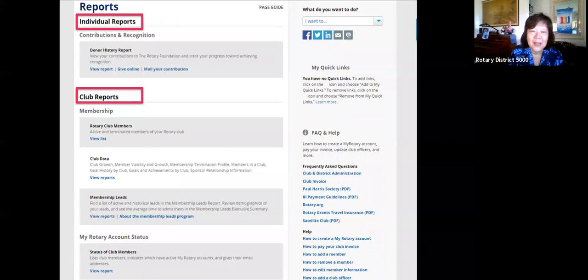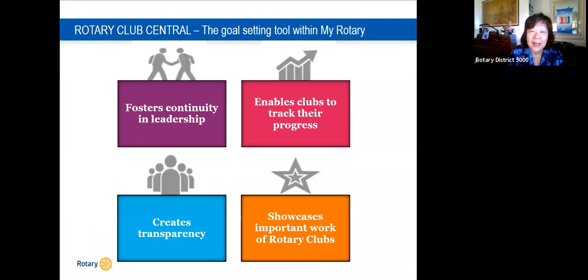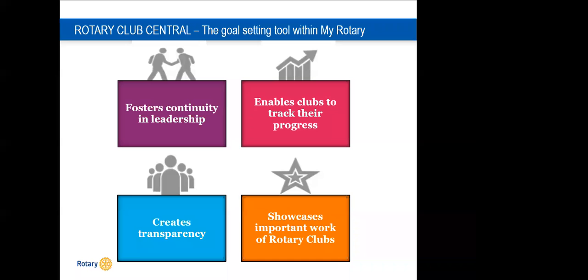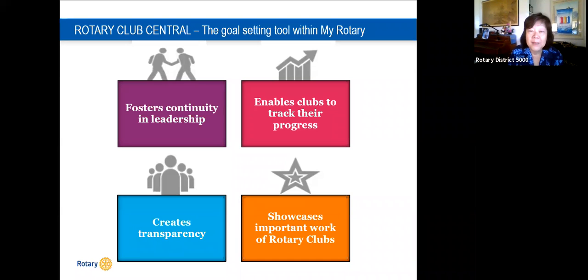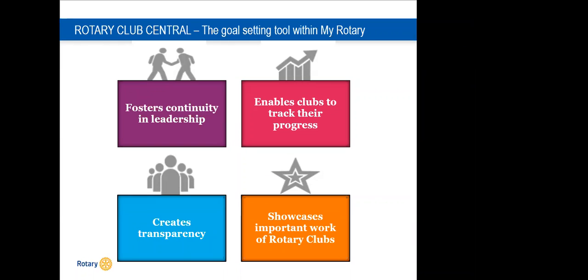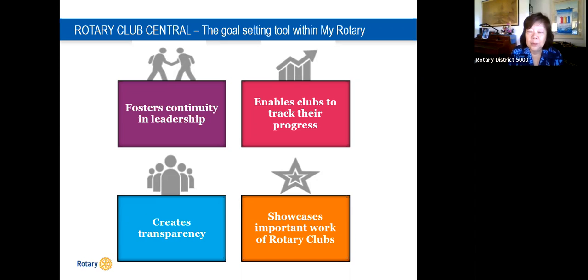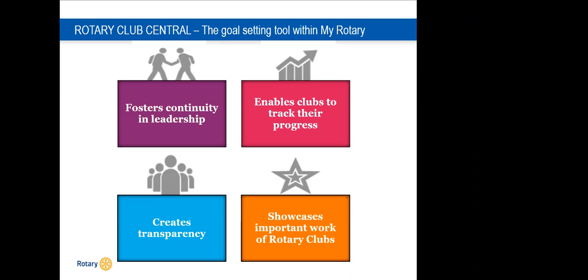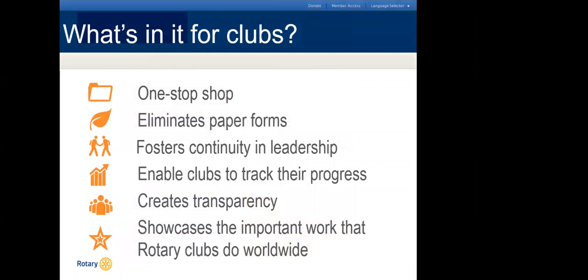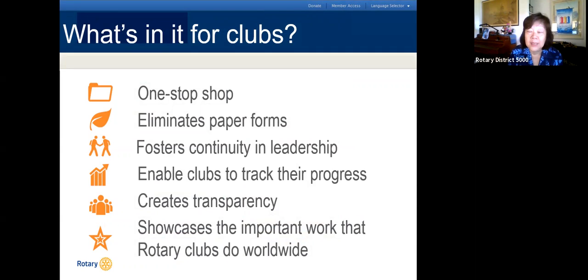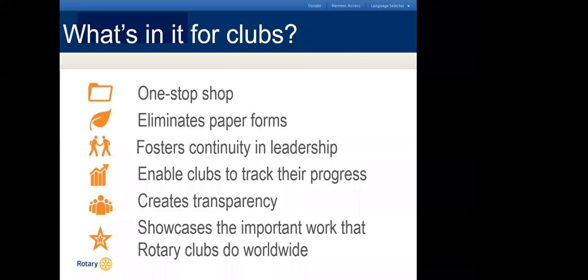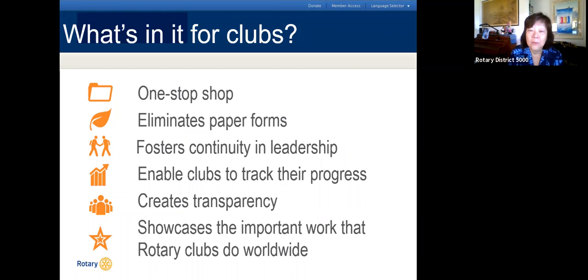There are club reports available, and you can also access reports in Rotary Club Central. Rotary Club Central is the goal-setting tool in My Rotary. It has the history of club numbers, helps you track your progress, and creates transparency so club members can see what the goals are and where you stand. It eliminates paper forms, and next year the rotation will be all online based on the information in Rotary Club Central.